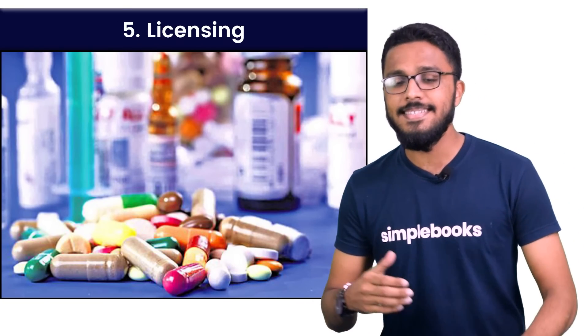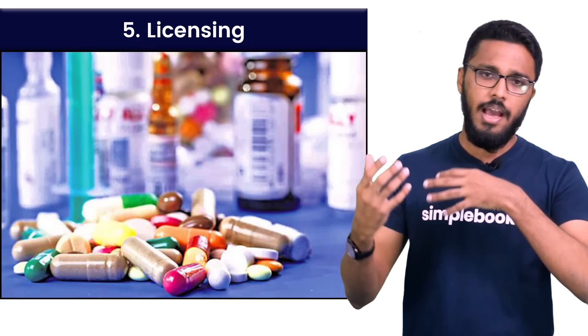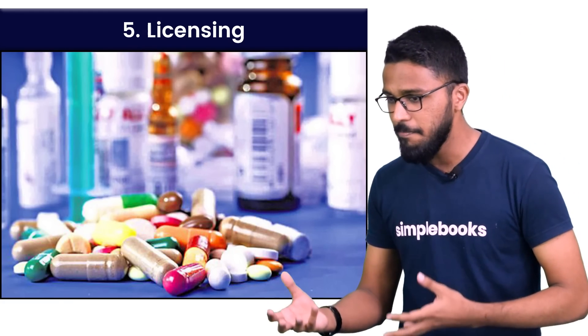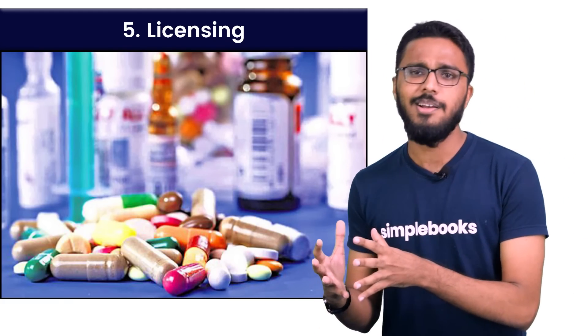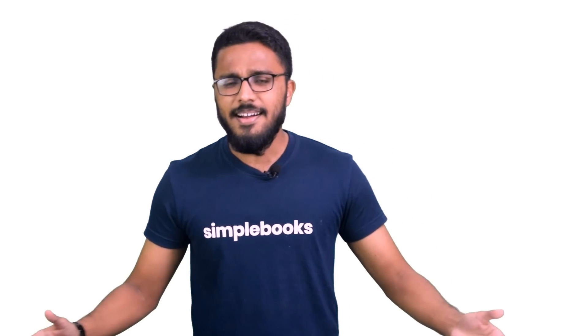For example, licensing in and licensing out. In pharmaceutical companies, they have to make research and development teams. They are not going to manufacture it — they have to make a licensing agreement. It is a manufacturing company. They will make it in this way.